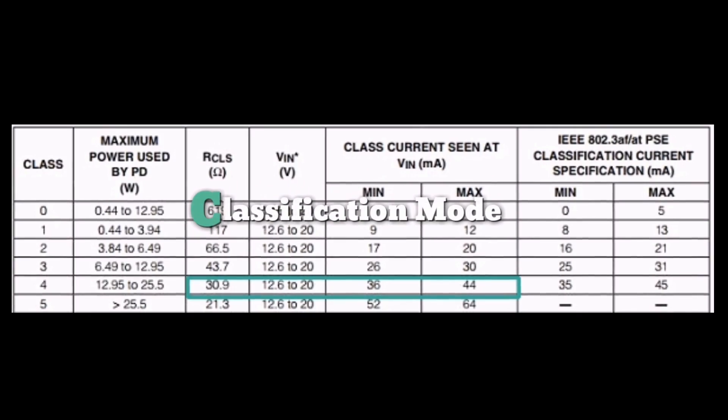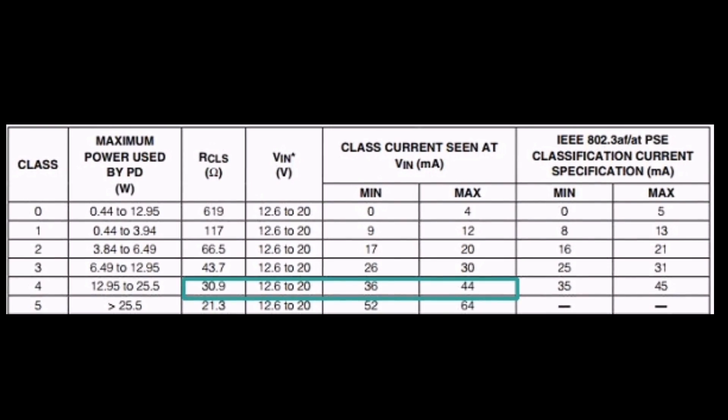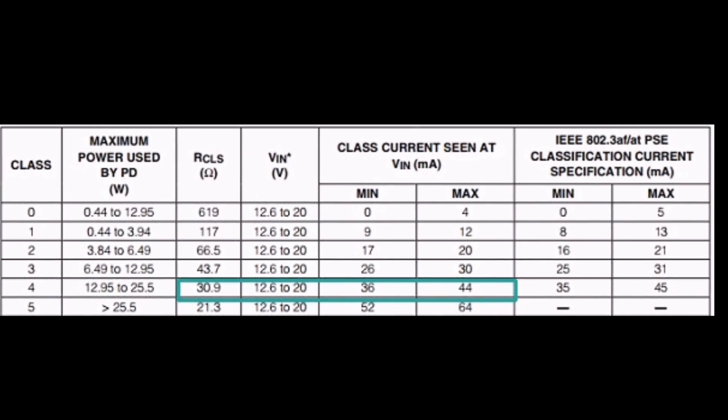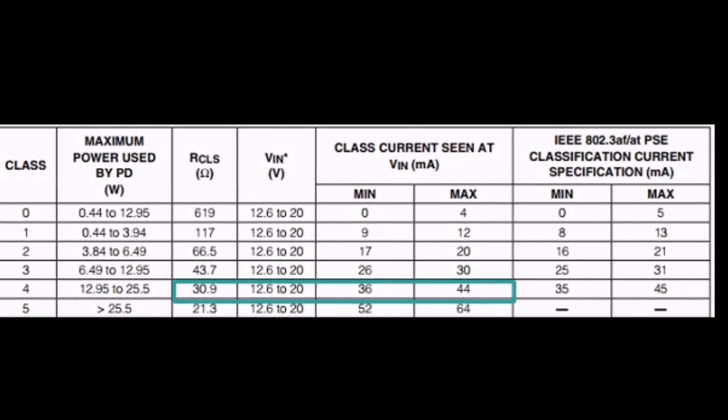An external classification resistor connected from the CLS pin to VSS determines the classification current.